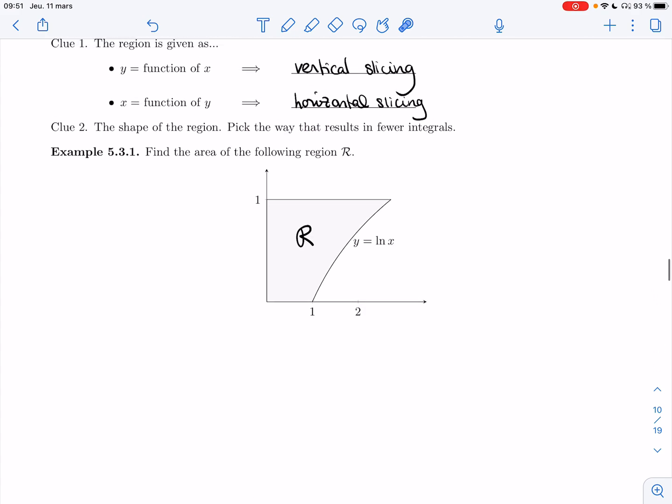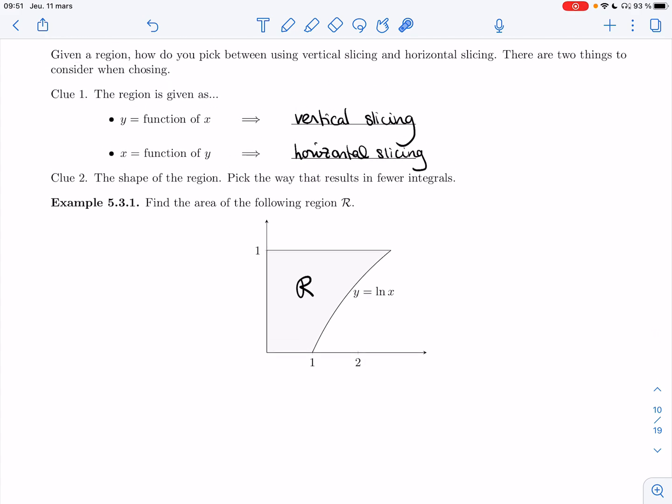So let's do an example where it isn't clear really which way to go. Example 5.3.1. I want to find the area of the following region R. So the only curve that I'm given that's not a straight line is y equals ln of x. I also have y equals 1, I have y equals 0, and I have x equals 0.